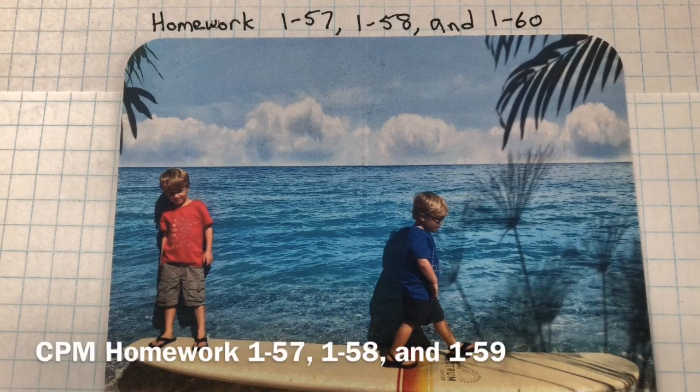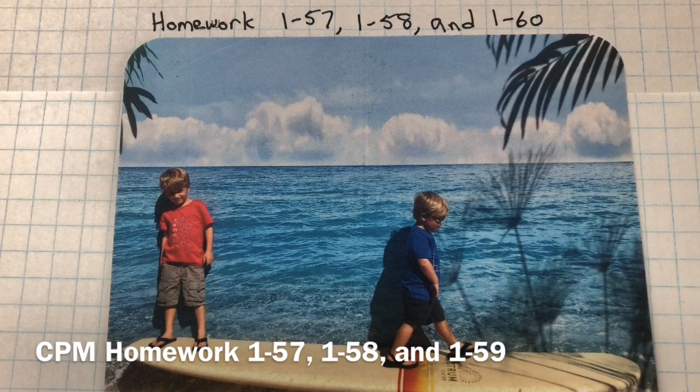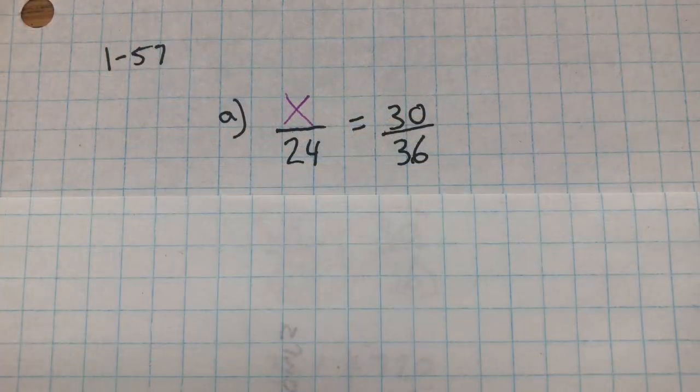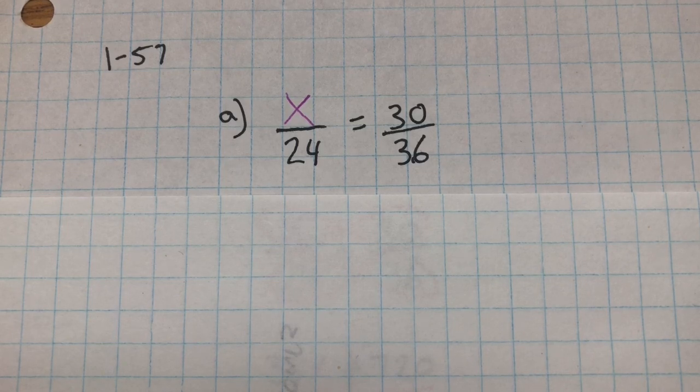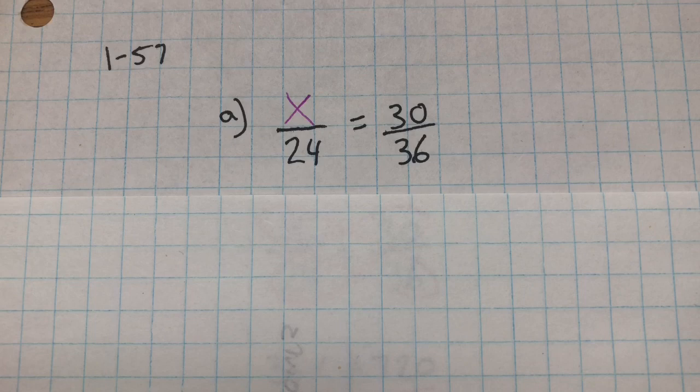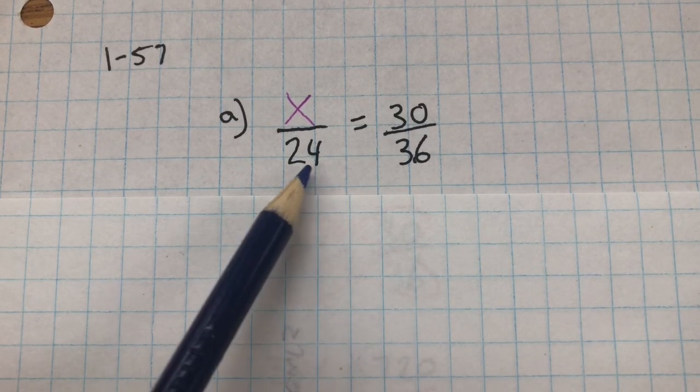This is the homework for 157, 158, and 160. In 157, you need to solve the proportions. So two ratios are proportional when they're equal to each other.